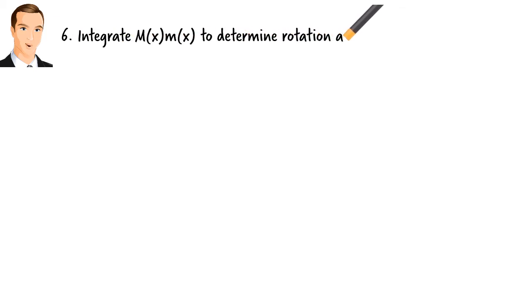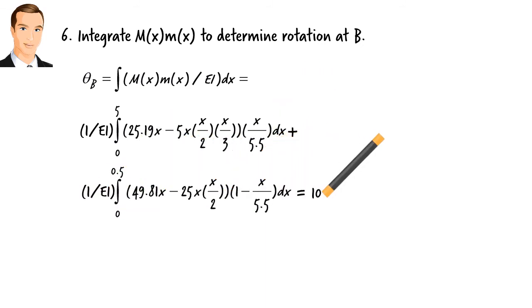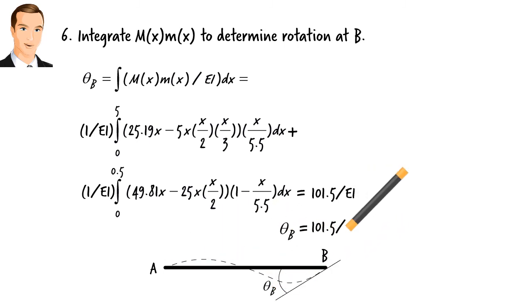Then, we integrate the product of the two moment expressions over EI in order to determine the slope. The slope at B comes out to be 101.5 over EI.